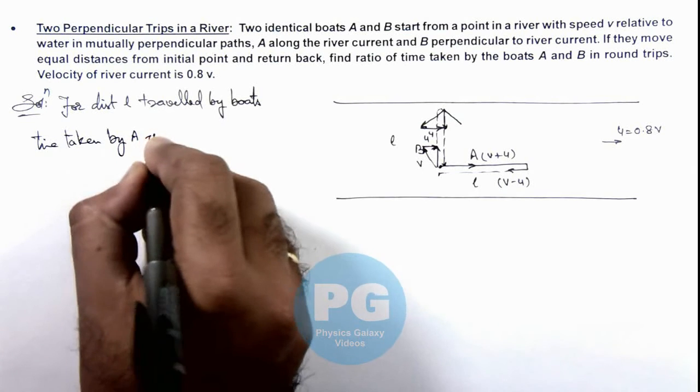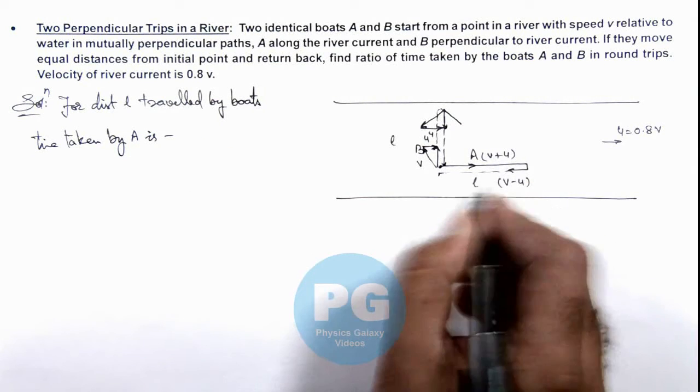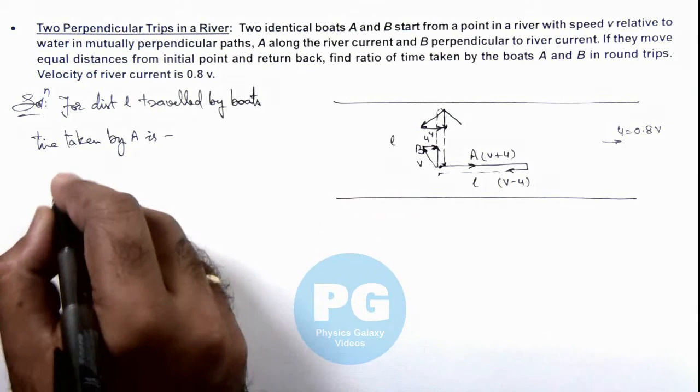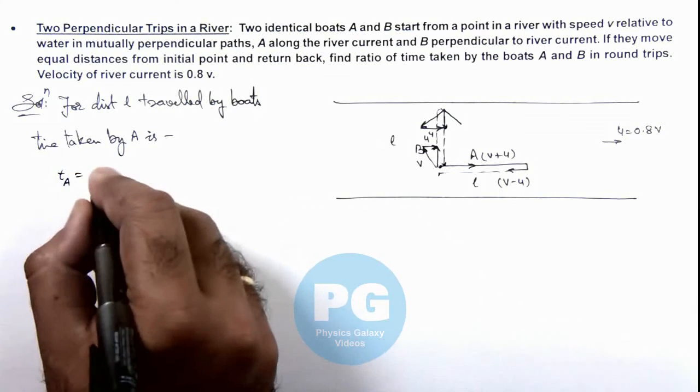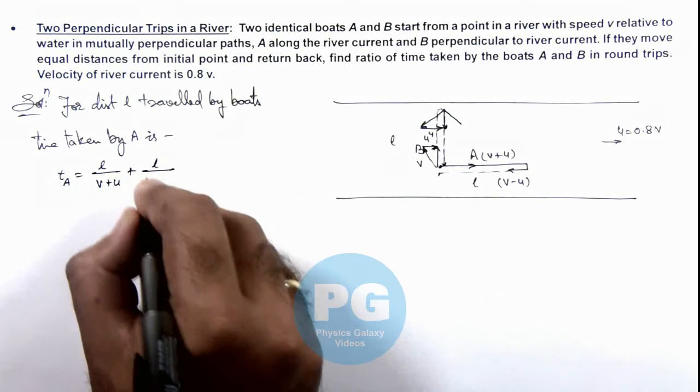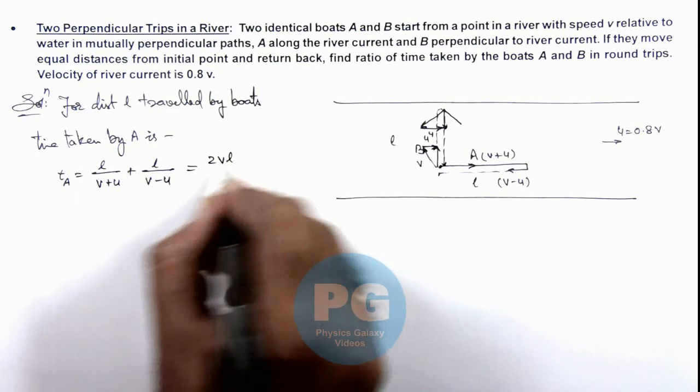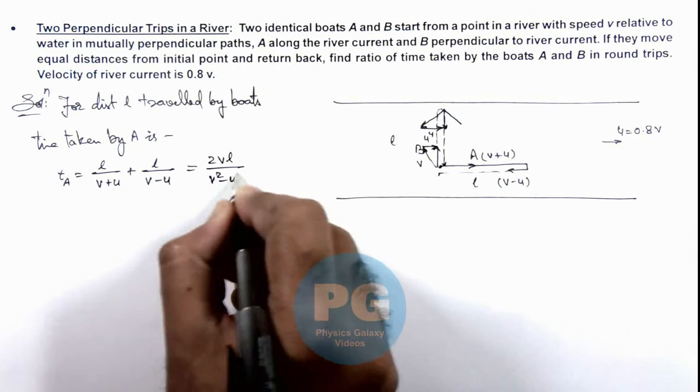By A is, here A is traveling with a speed v plus u and then return is with v minus u. So time for A we can write as l by (v plus u) plus l by (v minus u). On simplifying we are getting it 2vl by (v squared minus u squared).